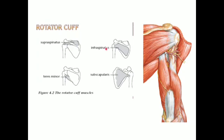Here is a picture showing the rotator cuff muscles: supraspinatus, infraspinatus, teres minor posteriorly, and subscapularis anteriorly. All these tendons insert to the greater tubercle and fuse with the fibrous capsule before insertion.